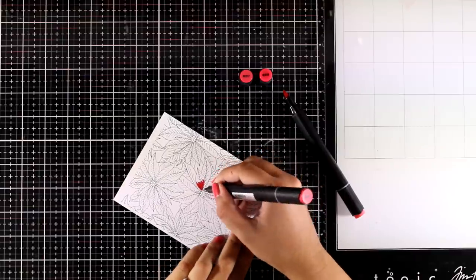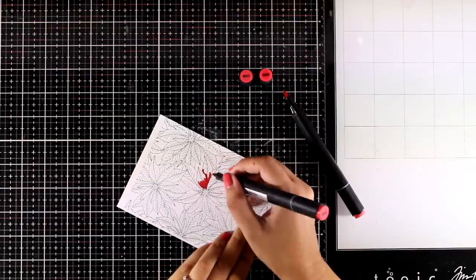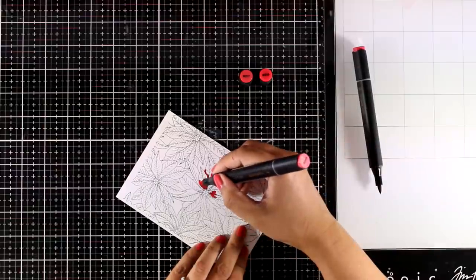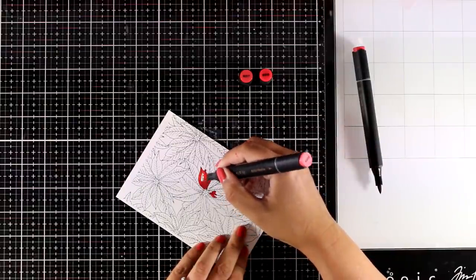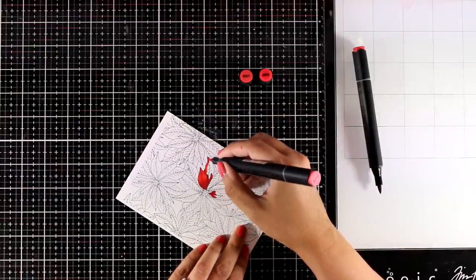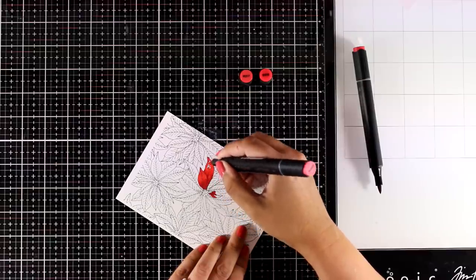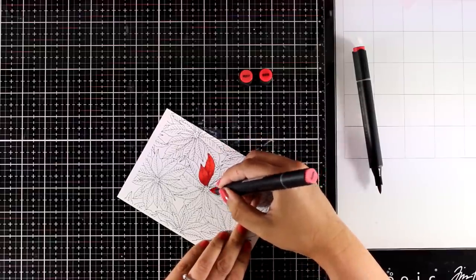And here I'm using my Altenew markers to add some color. So for this first technique all I'm doing is stamping the background image, coloring in all the different areas, and then you have something to place your sentiment on top and you are done.